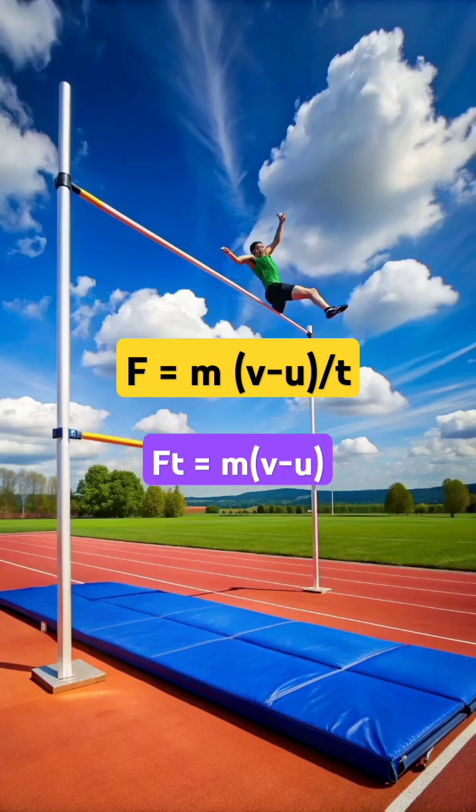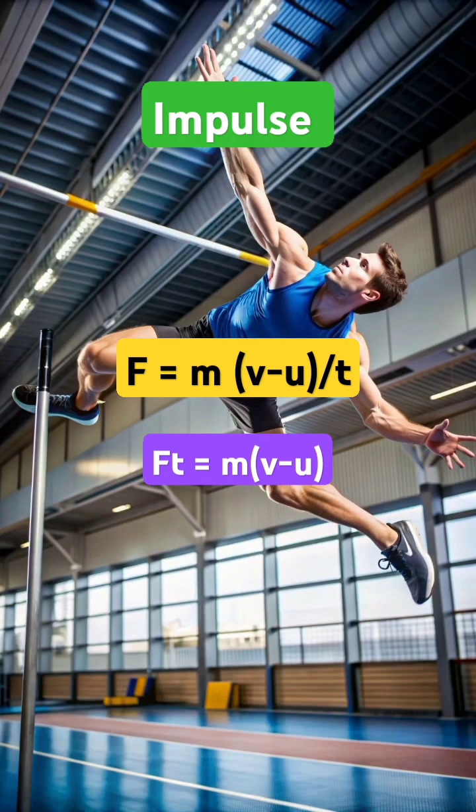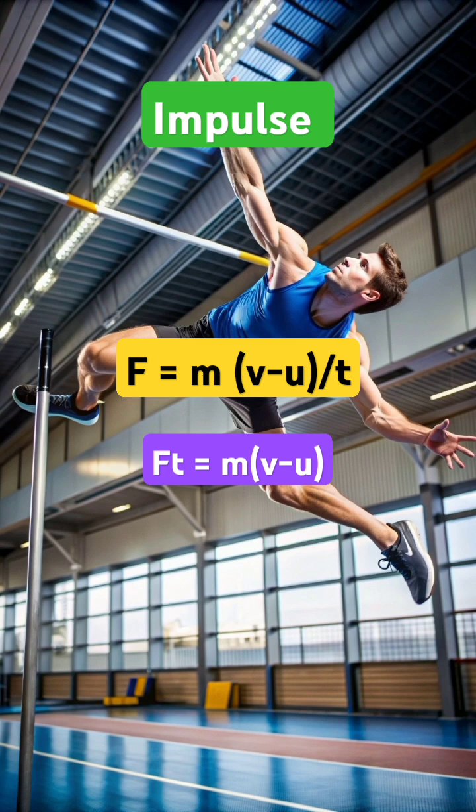Then if you send t to the other side, it is Ft is equal to m into v minus u. This change in momentum is equal to force into time. This is called impulse.